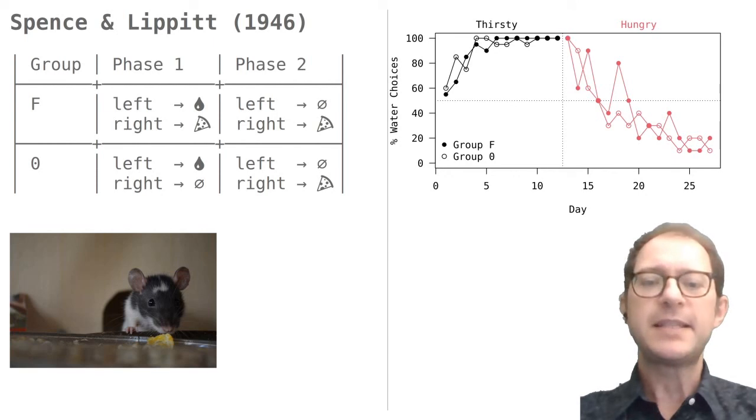According to these results, it seems hard to argue that Tolman and Honzik's rats could learn a mental map of a 14-choice maze, including the location of the food, if Spence and Lippitt's rats couldn't even remember that going right in the very simple maze led to food.